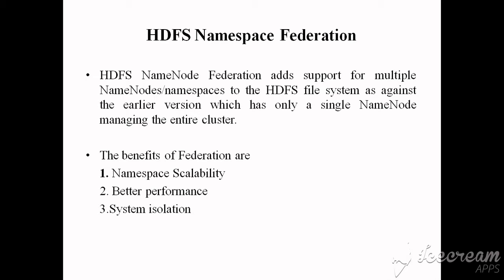The second benefit is better performance — since we have multiple name nodes in the cluster, it improves the system throughput. You can perform more read and write operations because we have more than one name node. The third benefit is system isolation: since we have different name nodes and different namespaces, different users can be isolated to different namespaces with the help of multiple name nodes.